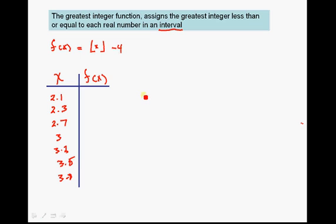The previous video showed solving this function for 2.3. Now we're going to solve it for a whole bunch of different values, but you'll see there's a pattern that develops. So we'll take f(2.1) equals the greatest integer function of 2.1 minus 4. When we're using this function, it assigns the greatest integer less than or equal to each real number.